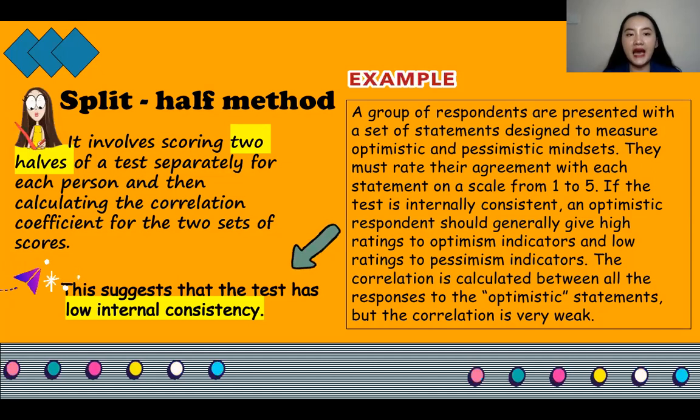So we have examples of the internal consistency. So a group of respondents are presented with sets of statements designed to measure, for example, optimistic and pessimistic mindset, so positive and negative mindset. So they must rate your agreement with each statement on a scale from one to five. So five is the highest and one is the lowest.